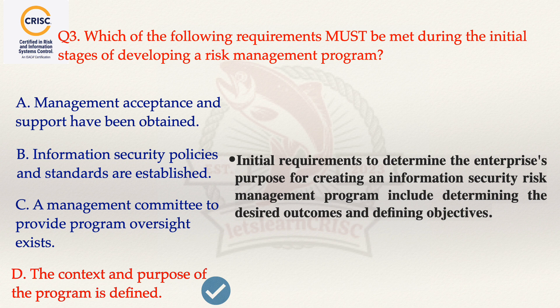Moving to option C, which states a management committee to provide program oversight exists. This option is also incorrect because management oversight of the risk management program is a monitoring control developed to ensure the program meets business objectives. This process is established at the later stages of development, after the purpose of the program and the mechanics of its deployment have been established. That's why option D is correct.